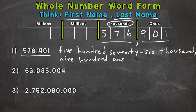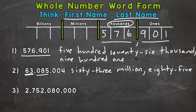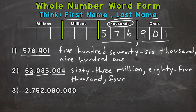On to number two. We start with this section — think first name, last name, read it as is. We have a 63. Last name: it's sitting in the millions period. So sixty-three million, comma. Now we move to the next section or period, read the number as is. We have an 85 there. We're sitting in the thousands period, so eighty-five thousand, comma. And we're over to the ones period — remember for the ones period we just read the number as is, there's no last name. So we have sixty-three million, eighty-five thousand, four.